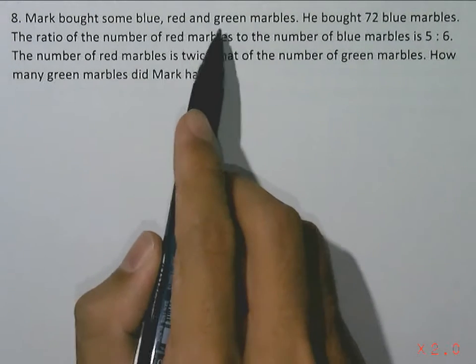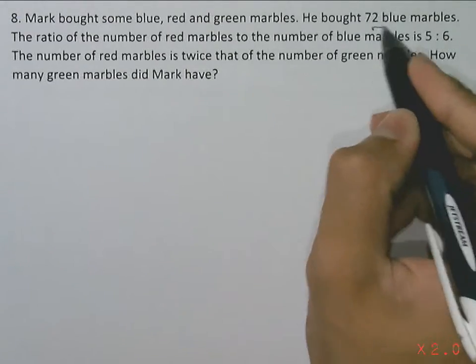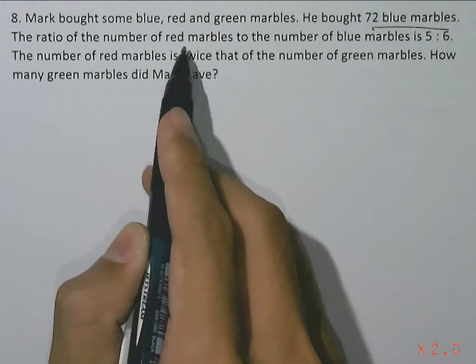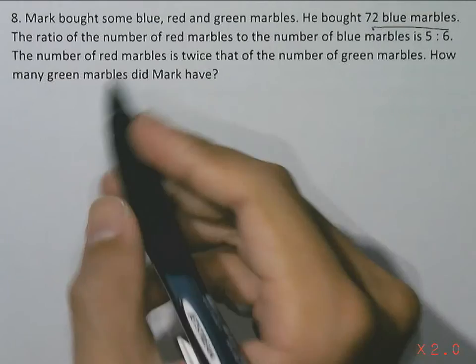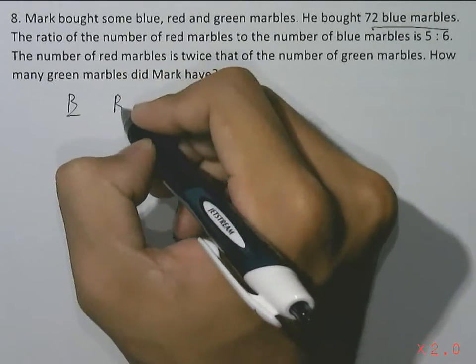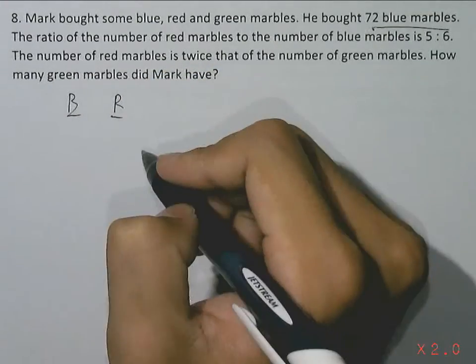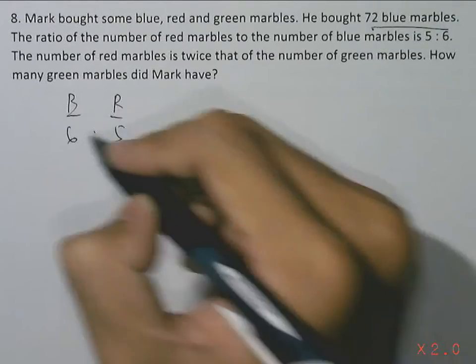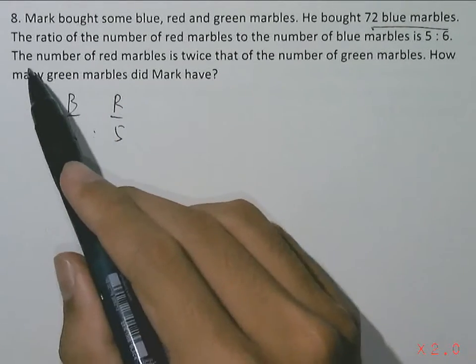Mark bought blue, red, and green marbles. He bought 72 blue marbles. The ratio of the number of red marbles to the number of blue marbles is 5 to 6, so red to blue is 5:6 according to the question.